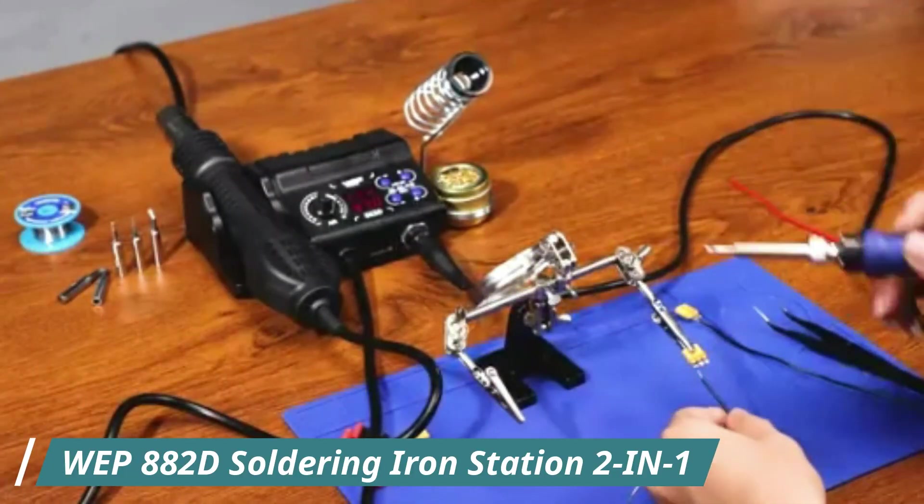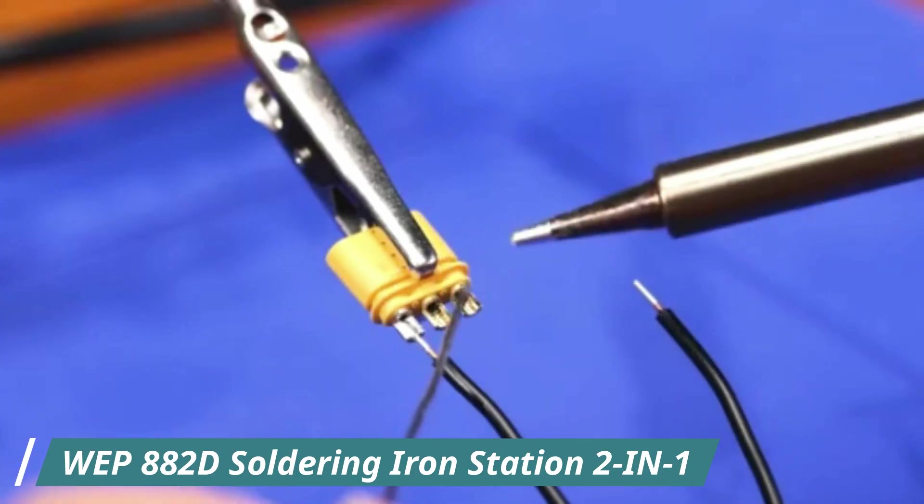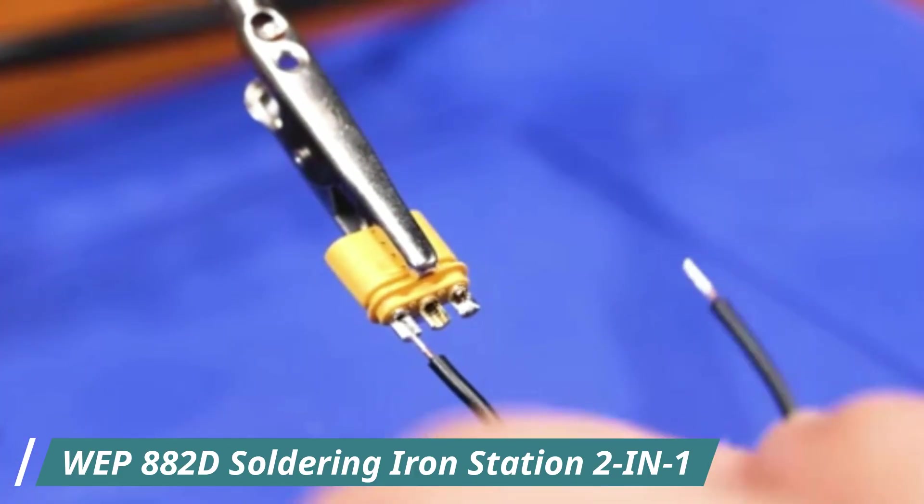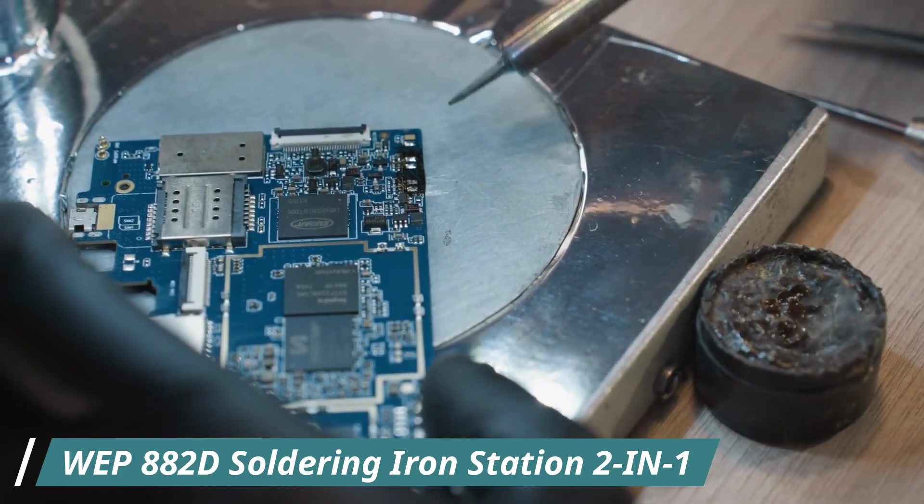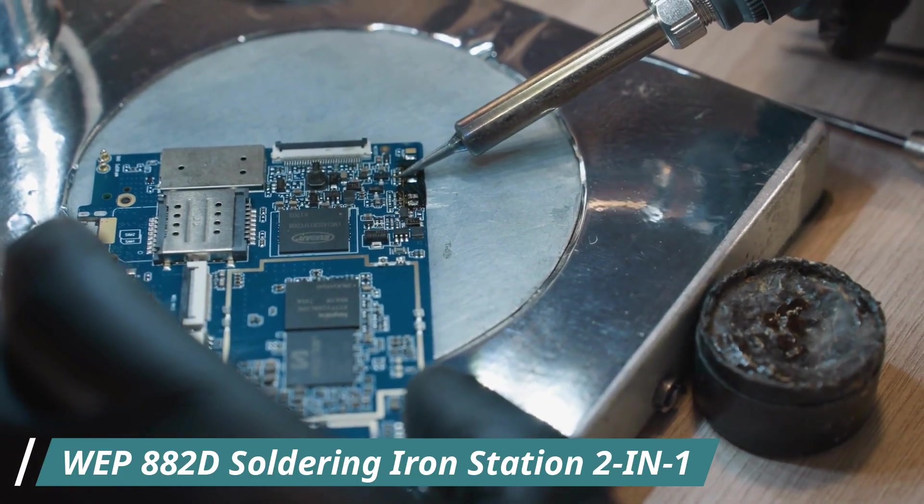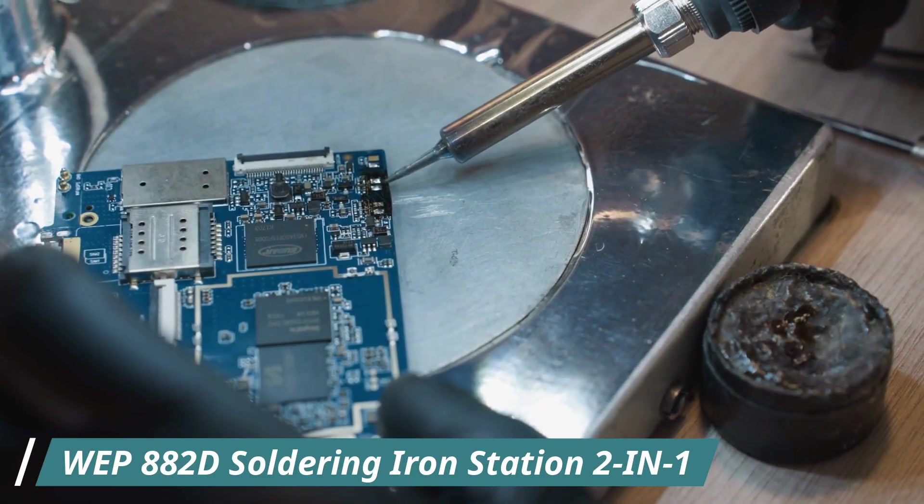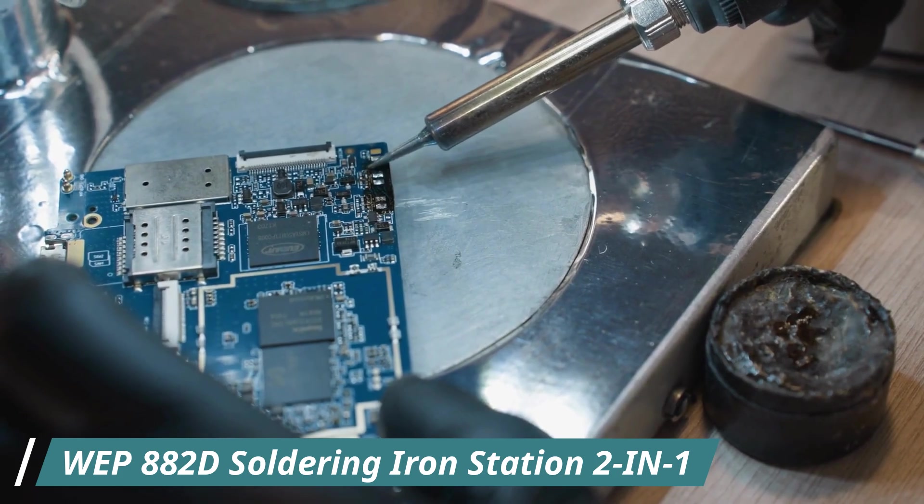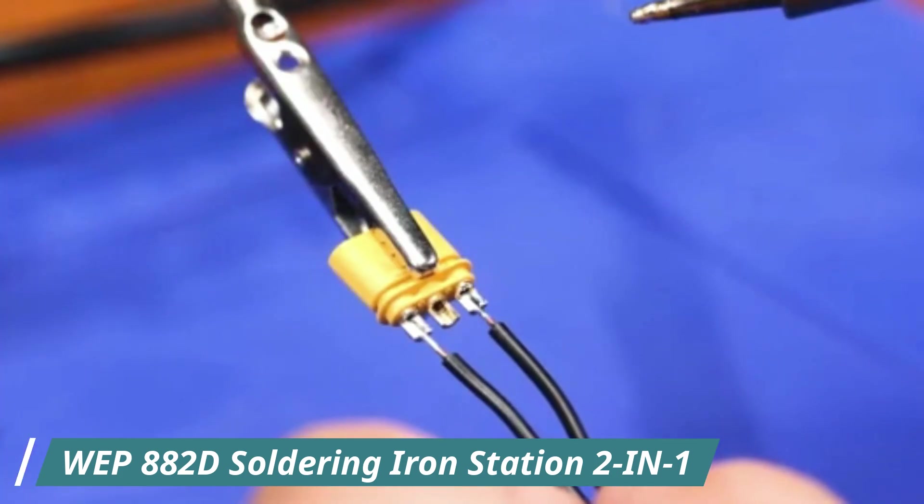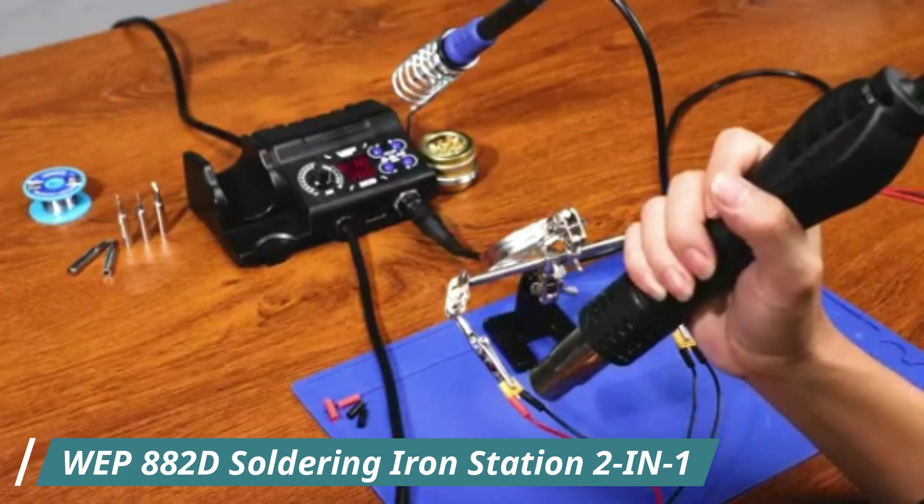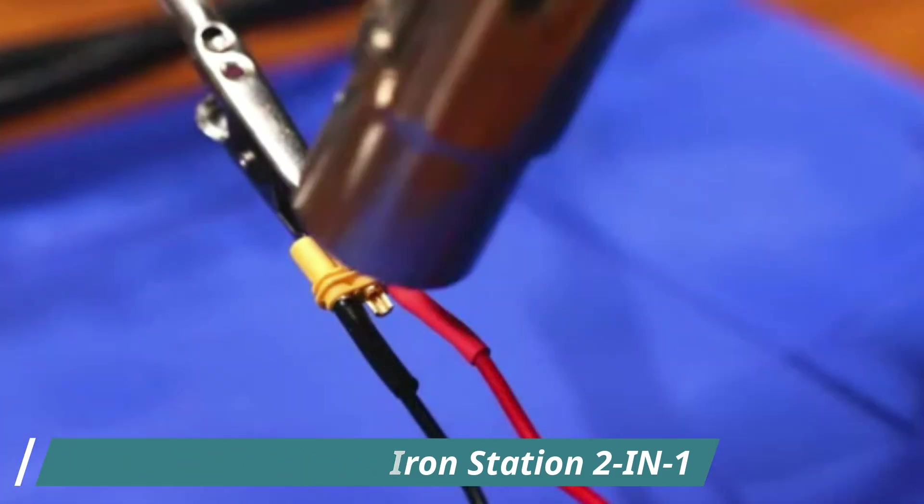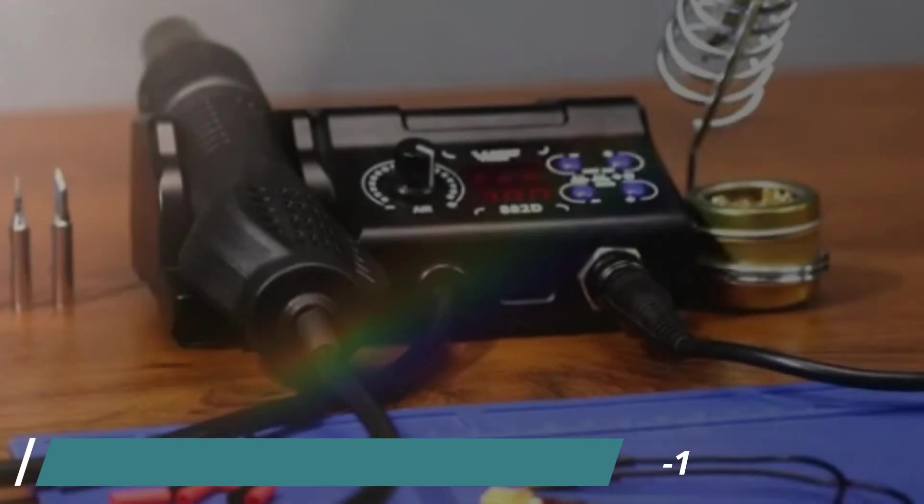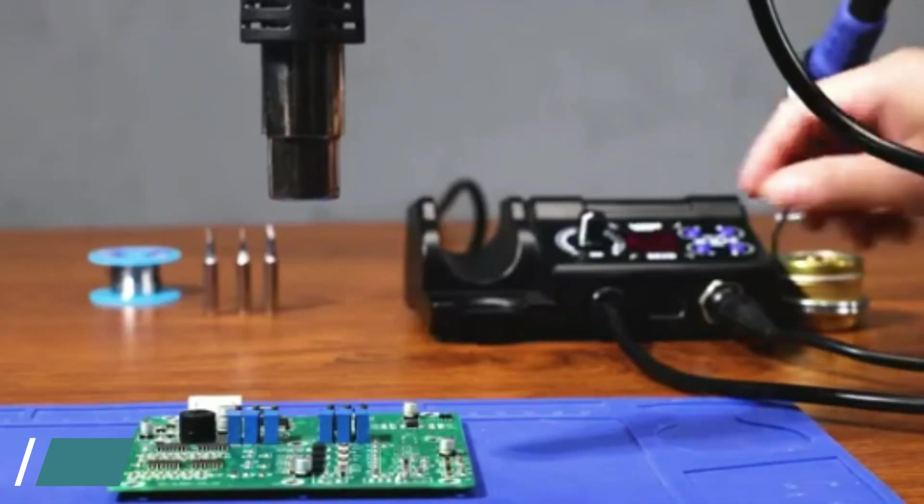The soldering iron heats quickly, within seconds, and maintains temperature with impressive consistency. The hot air gun offers adjustable airflow and temperature, allowing fine control for delicate SMD work or heat shrink applications. The build feels sturdy, and both the soldering iron and hot air handle have comfortable grips.